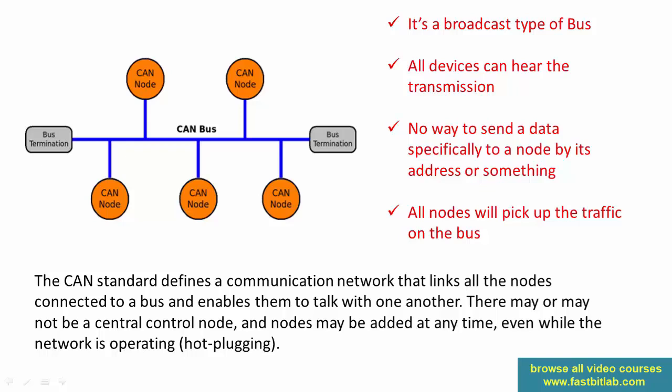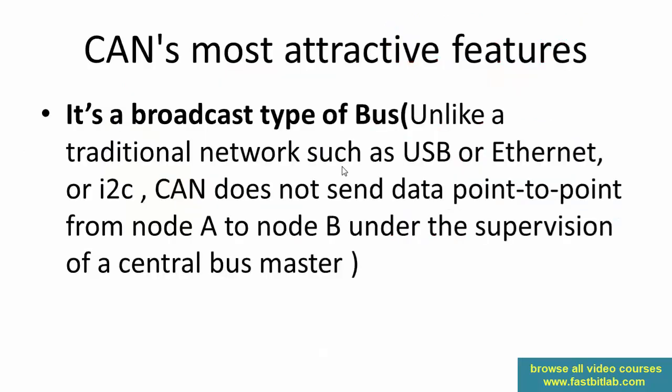Let me summarize some of the important features of CAN. CAN is a broadcast type of bus. Unlike traditional networks such as USB, Ethernet, or I2C, CAN does not send data point-to-point from node A to node B under the supervision of a central bus master. For example, in USB you have a USB device and USB host — the USB host is the bus master and controls all traffic on the bus. There is nothing like that in CAN.